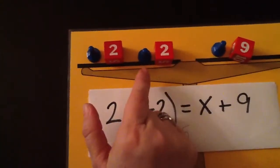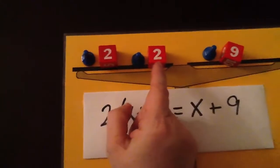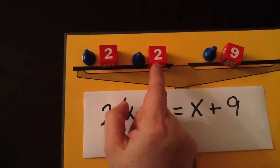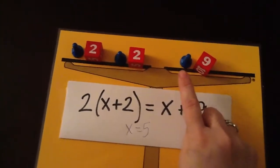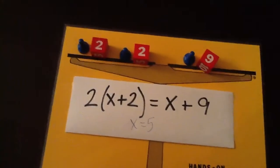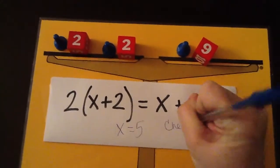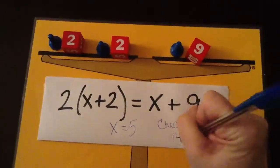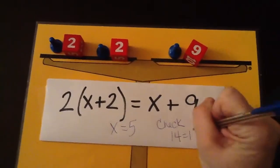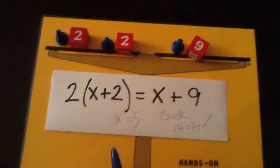So 5 plus 5 is 10, plus 2 is 12, plus another 2 is 14. And then on this side we have 9 plus 5 which is 14. So we need to make sure that we write our check. Our check tells us that we have 14 on each side. And since that's equal we know that that is a correct answer. So x equals 5.